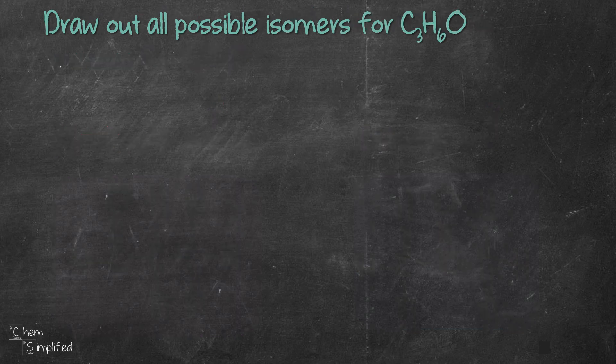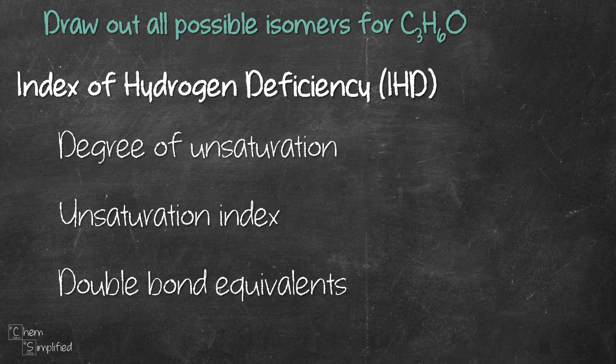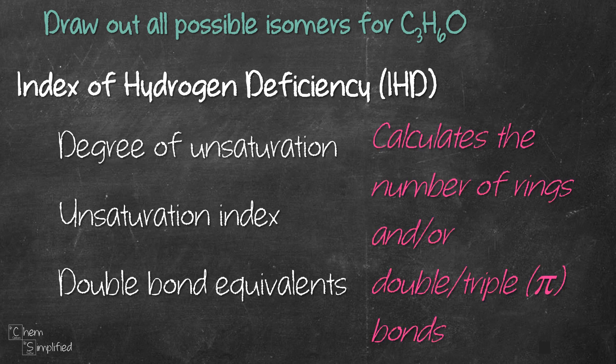Before we begin to find all the other isomers, it will be helpful to know a little bit about this formula — specifically how many rings or pi bonds it can have. That brings us to calculating IHD for this formula. IHD stands for index of hydrogen deficiency, sometimes used interchangeably for degree of unsaturation, unsaturation index, or double bond equivalence. It tells us how many rings or double or triple bonds are present, giving us a target to work towards.